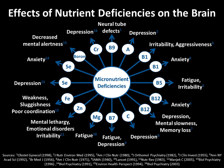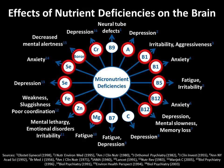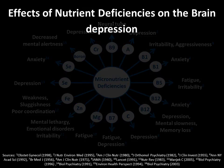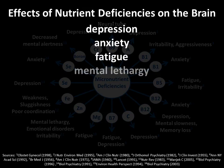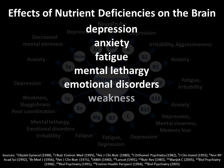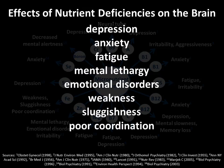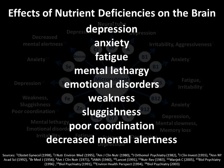This next slide shows how deficiencies in multiple nutrients can affect one body system — the brain. As you go around this circle diagram, you can see deficiencies in vitamin A, vitamin B1, B5, B12, and in minerals like magnesium, zinc, iron, selenium, boron, and chromium. Researchers have found that deficiencies in these nutrients cause things like depression, anxiety, fatigue, mental lethargy, emotional disorders, weakness, sluggishness, poor coordination, and decreased mental alertness. So deficiencies of many different minerals and vitamins can cause significant and serious effects on body systems.